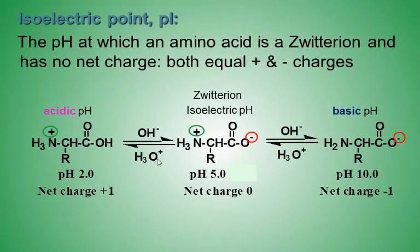The isoelectric point of a zwitterion is an important parameter. The isoelectric point, or pI, is the pH at which an amino acid is a zwitterion and has no net charge. Both positive and negative charges exist, canceling out and leaving the zwitterion with zero net charge. Each amino acid has a particular pI. Here is a general example of a zwitterion with a pI of 5 and net charge zero.